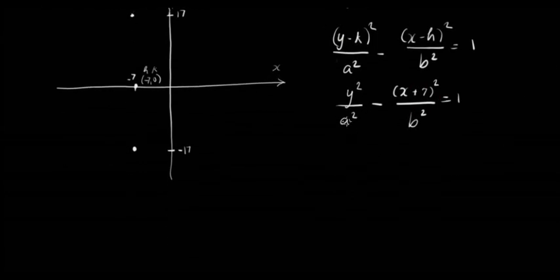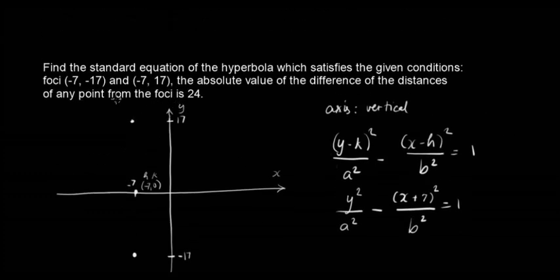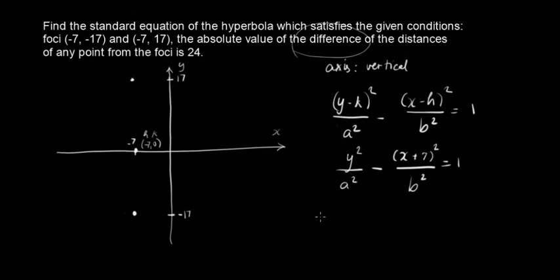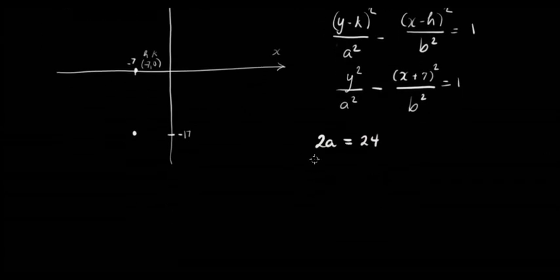Now we don't have the values of a and b. But we know from the problem that the absolute value of the difference of the distances of any point from the foci is 24. By definition, that is 2a. We have 2a = 24, so a = 12.